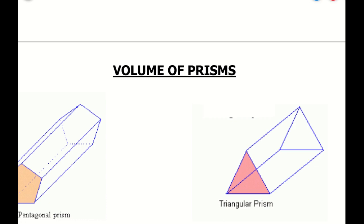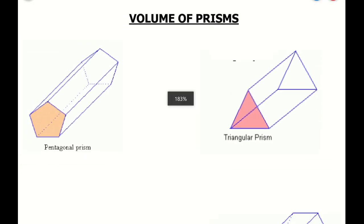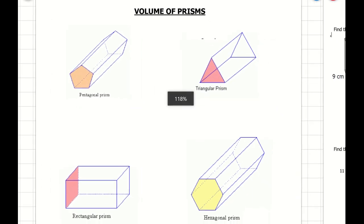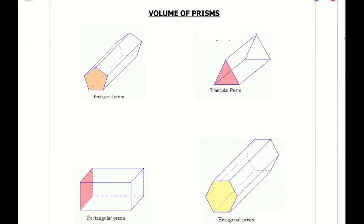Hi guys, so today we're going to talk about volumes of prisms. We have different kinds of prisms, but they all have one formula for volume in common, and that formula is going to be the same thing for all of them. The only difference is what shape the base is. For all prisms, volume is going to be big B, which is the area of the base, times H, which is the height of the prism.